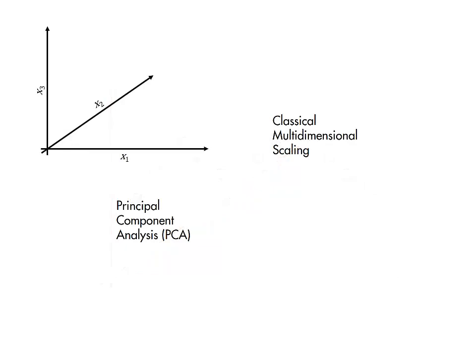Principal component analysis and classical multidimensional scaling provide two ways we can transform our data such that we can then potentially reduce the number of dimensions.